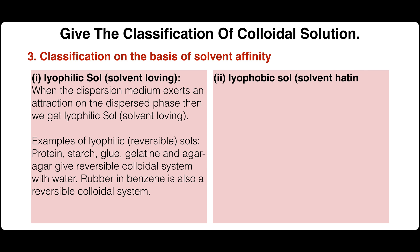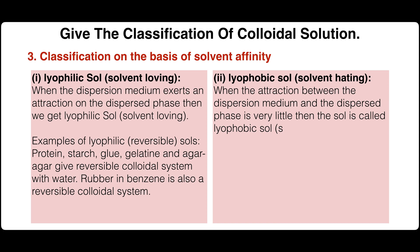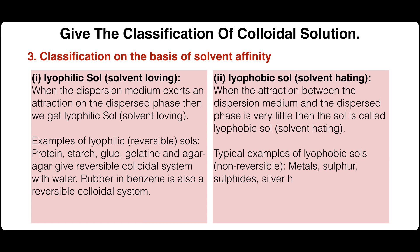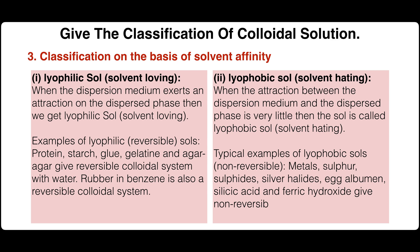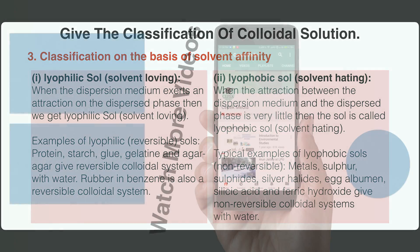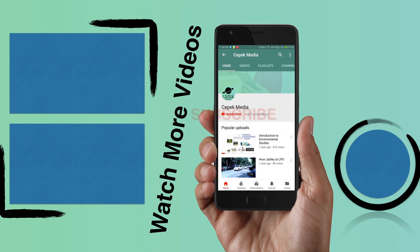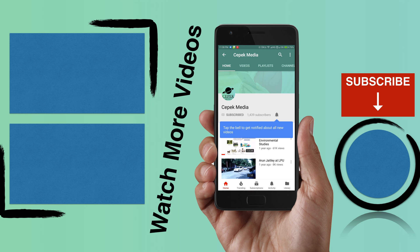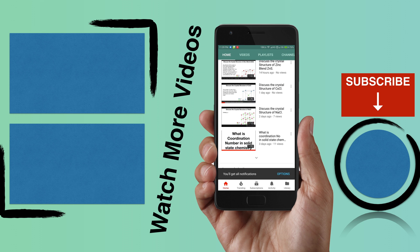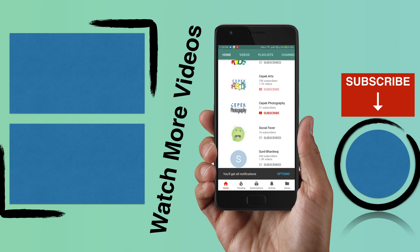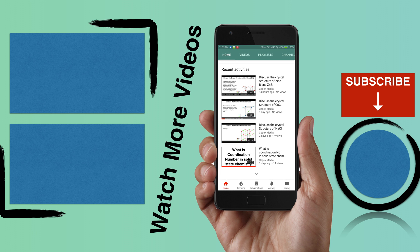Lyophobic: when the attraction between the dispersion medium and the dispersed phase is very little, the sol is called lyophobic, or solvent-hating. Typical examples of lyophobic non-reversible sols are metals, sulfur, sulfides, silver halides, egg albumen, silicic acid, and ferric hydroxide.